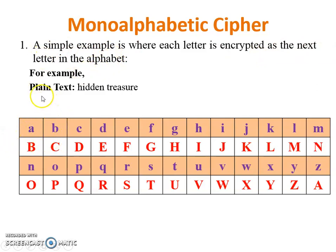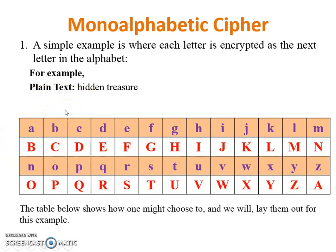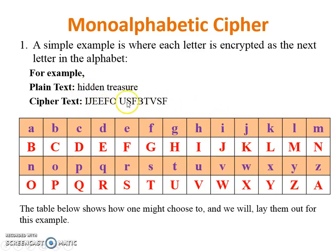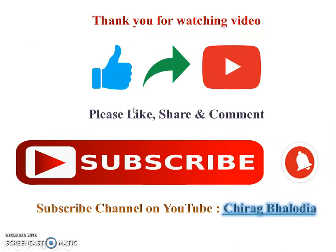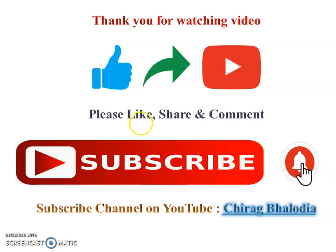So from the given plaintext, the ciphertext is generated as follows: H is encrypted with the next letter I, I is encrypted with J, and so on. This is the mono alphabetic cipher. Thank you for watching this video — please like, share, comment, and subscribe to my channel on YouTube.